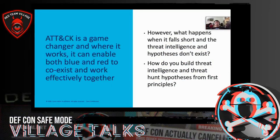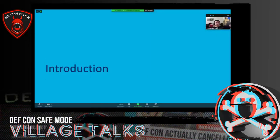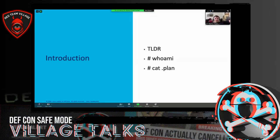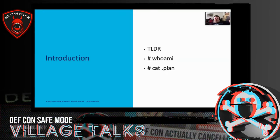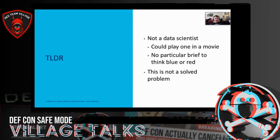Just to put a little bit of background behind this at a very high level — ATT&CK rocks. But what happens when ATT&CK doesn't give you the information you need? I'm not a data scientist. I'm not aligned to either blue or red. I do various activities on both sides of the fence. I fully acknowledge that this isn't a solved problem — this is my stab in the dark at trying to get somewhere with it.